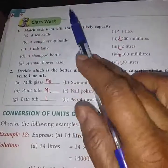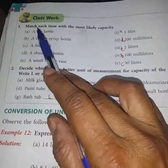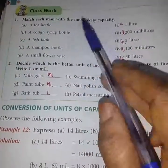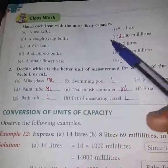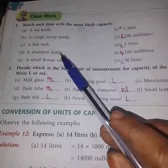See here in question number 1, which is given that match each item with the most likely capacity. Some items are given here and its capacity is given here. We have to match the items with its capacity.